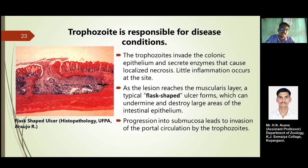You can see in this picture that a flask-shaped ulcer is formed. This histopathological study helps in diagnosis — examining what type of ulcers and how extensive the lesions are to determine how critical the patient's condition is, examined by endoscopy for diagnostic purposes. These flask-shaped ulcers can undermine and destroy large areas of the intestinal epithelium.